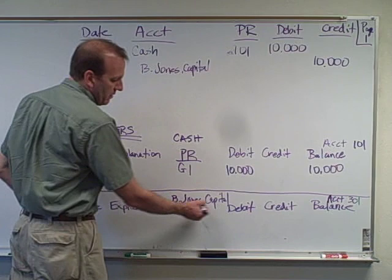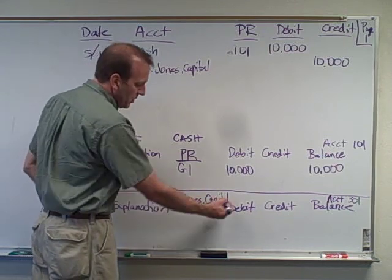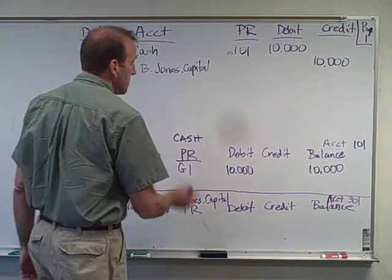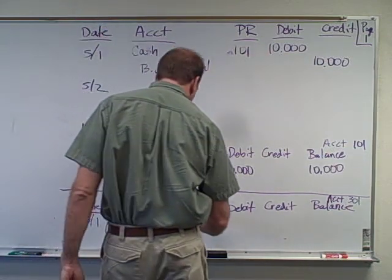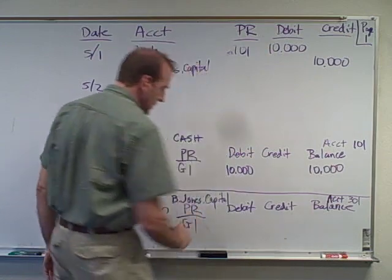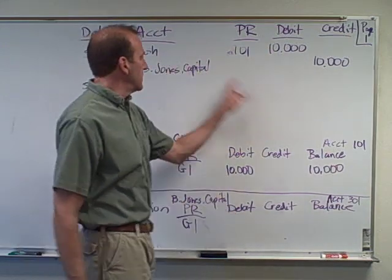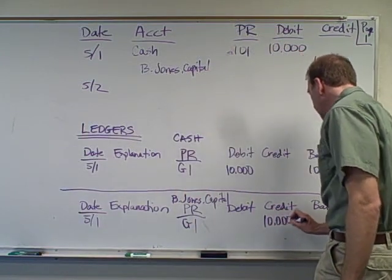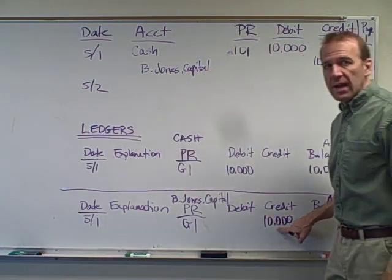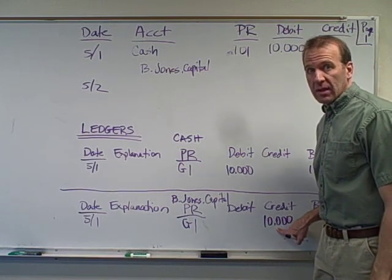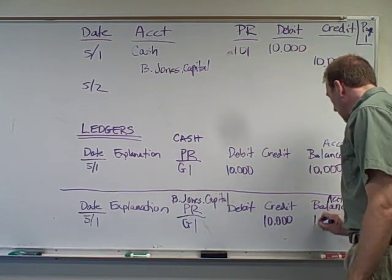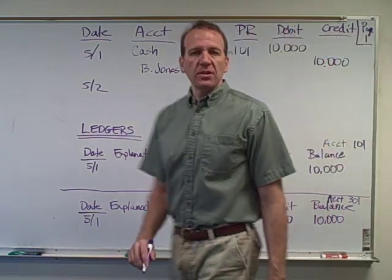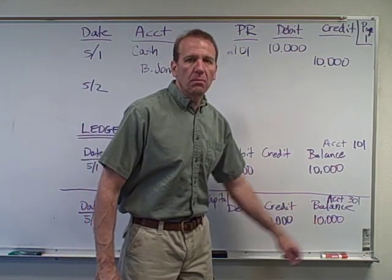Now we have to look at the second part of the transaction: B. Jones Capital. I'm going to put down the date, 5-1. The posting reference is going to be the same, G-1, because it's coming from the same page. There's no debit because this is a credit, so I'm going to put down $10,000 credit. This is the normal balance for a capital account, so I'm just going to put it as a positive number. If you ever debit this account, it would reduce this overall balance.